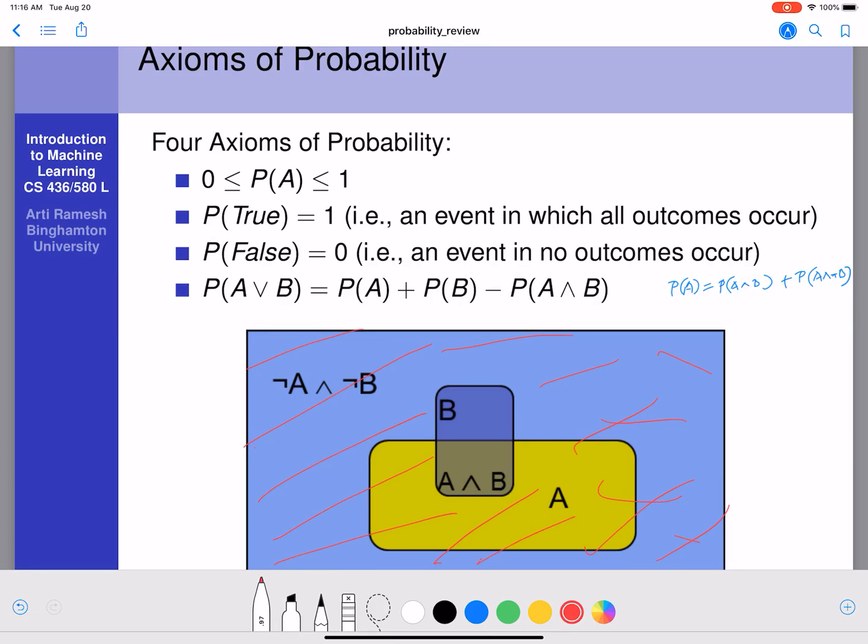And in that, we only want A and not B. So A is this area here marked by the yellow. So A and not B is given by this area.